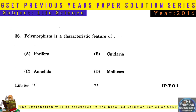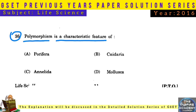Question No. 36: Polymorphism is a characteristic feature of Cnidaria (Coelenterata).